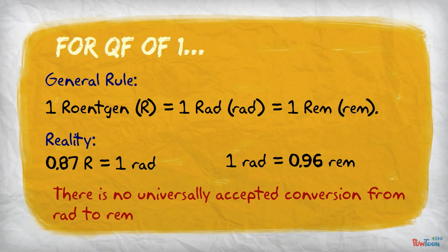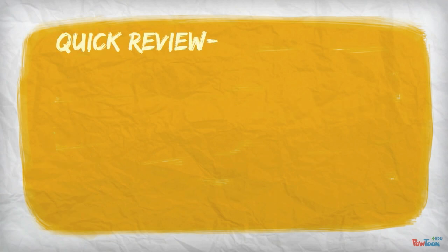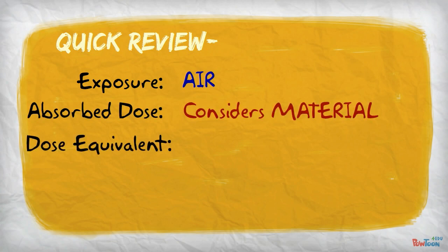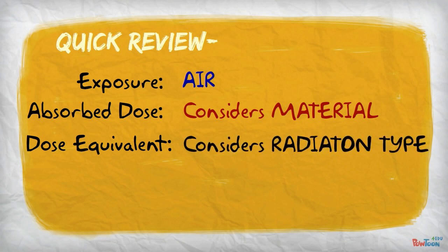Let's quickly review. Exposure measures the radiation effect in air. Absorbed dose measures the radiation effect in a specific type of material. And dose equivalent measures the radiation effect of a specific radiation type.